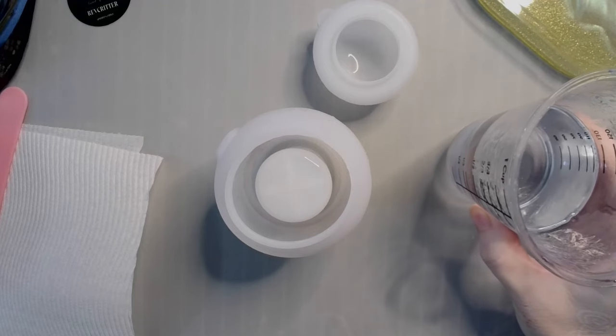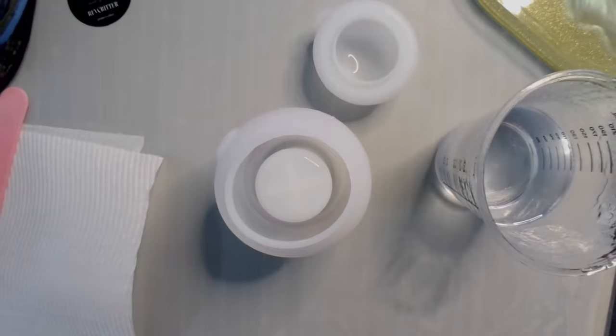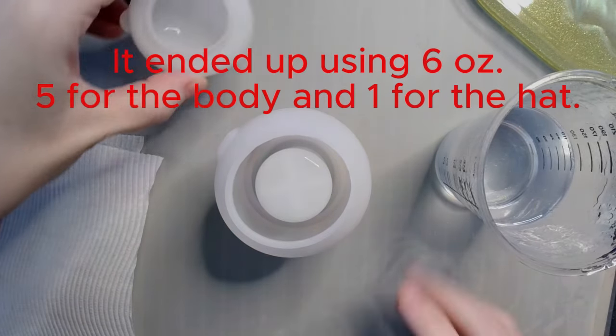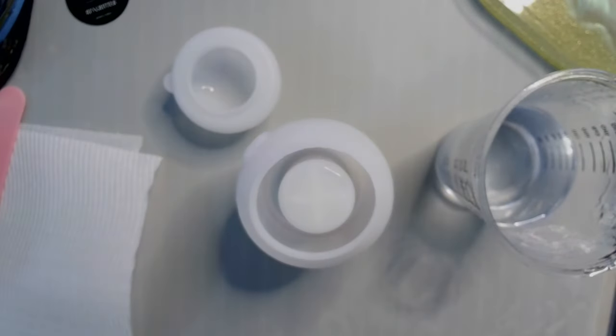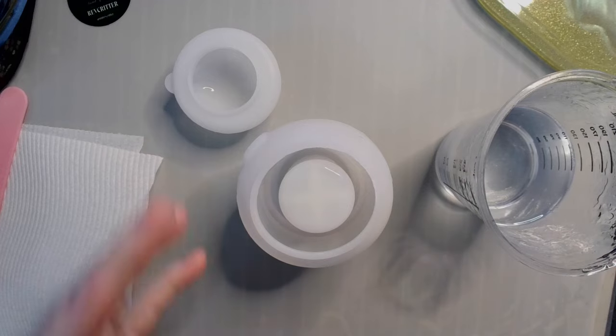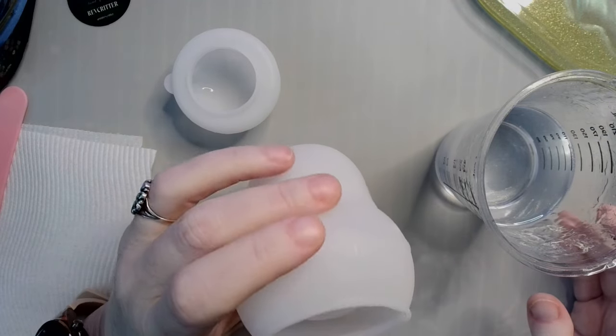So we're winging it. So what I did is I put four ounces in the cup. We've got four ounces of resin. This is just my regular one-to-one epoxy resin, medium viscosity.